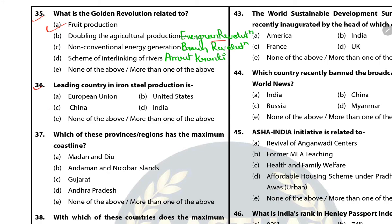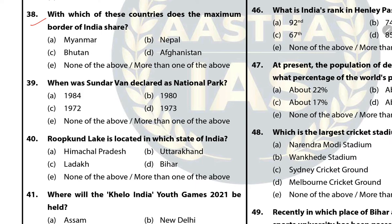Question 37: Which province or region has the maximum coastline? The answer is B — Andaman and Nicobar Island. Andaman and Nicobar Island has 1962 km of coastline and Gujarat has 1215 km of coastline. Question 38: Which country does the maximum border of India share? The answer is E — None of the above, as the right answer is Bangladesh.